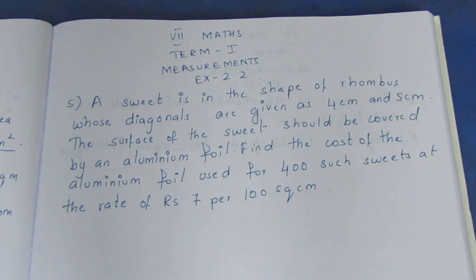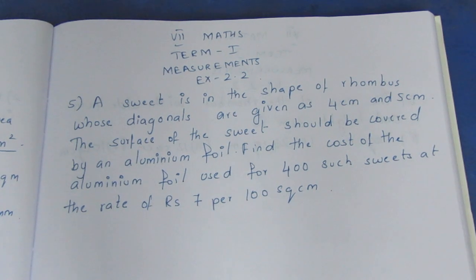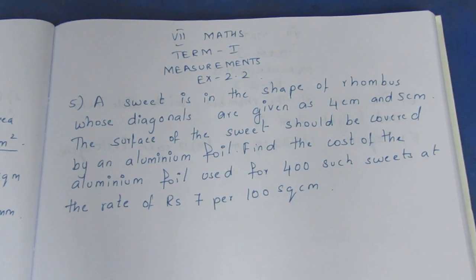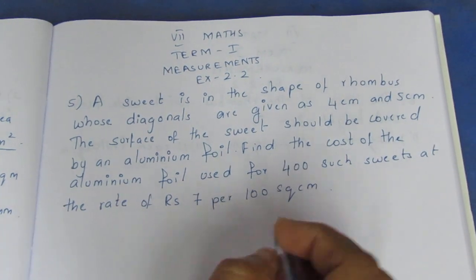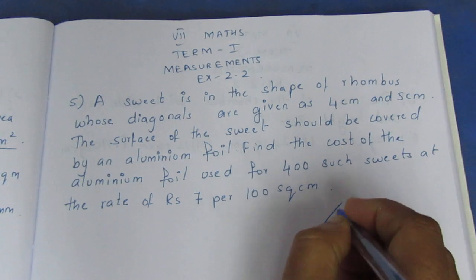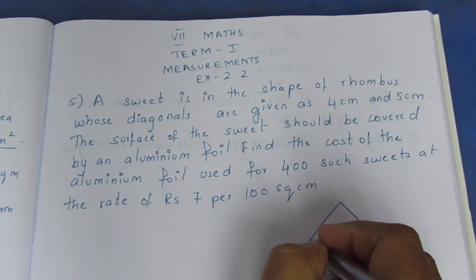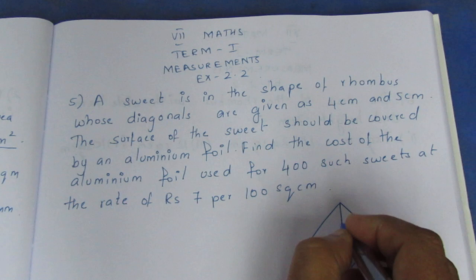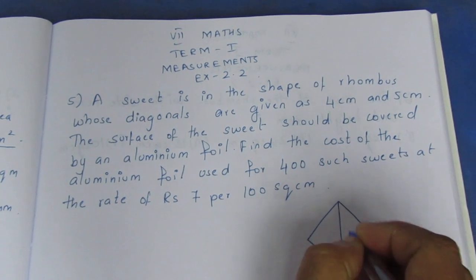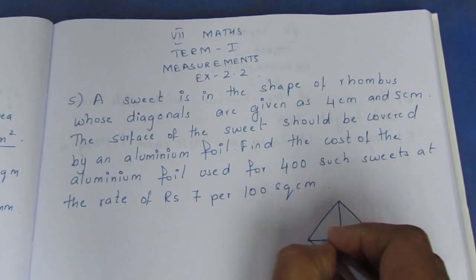A suite in the shape of a rhombus whose diagonals are given as 4cm and 5cm. The suite is in rhombus shape. One diagonal is 4cm and the other diagonal is 5cm.